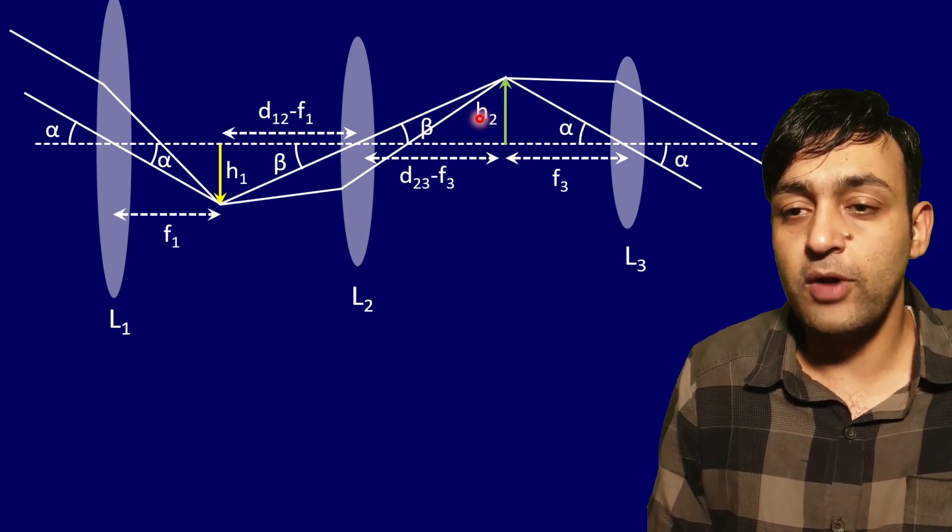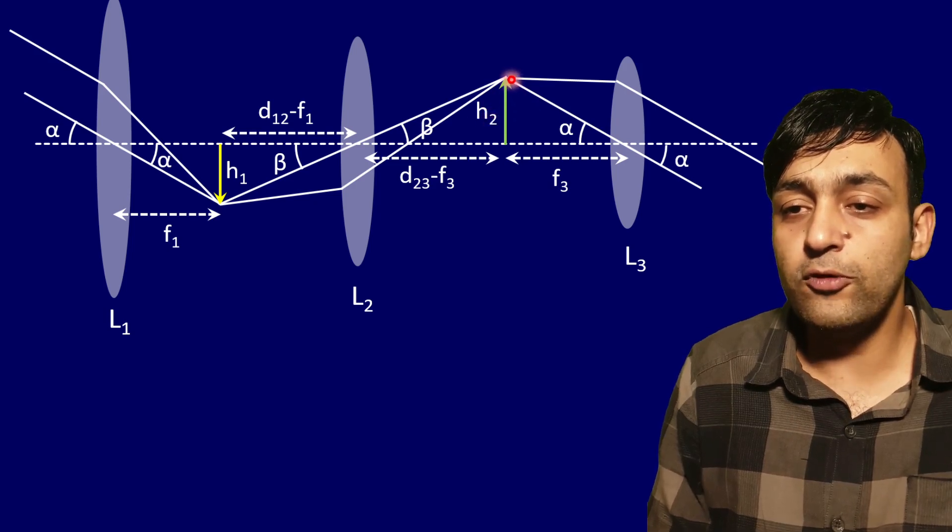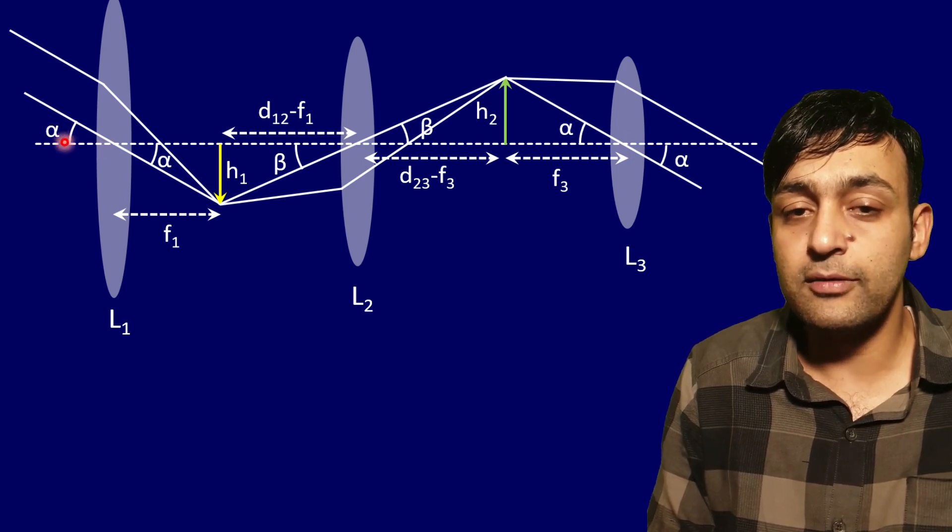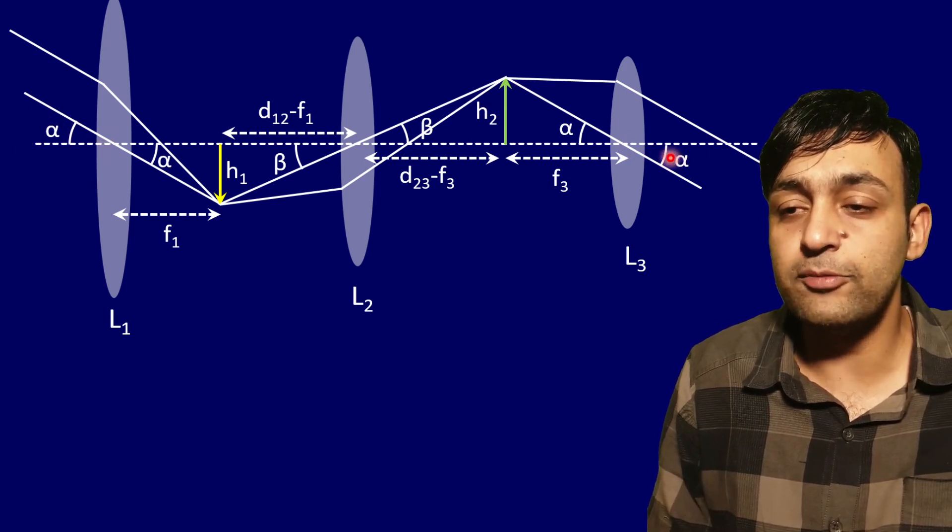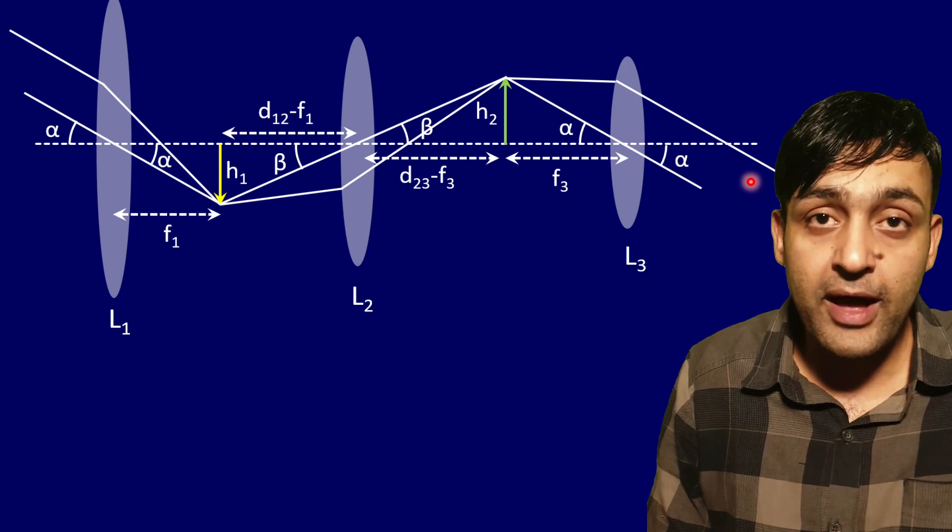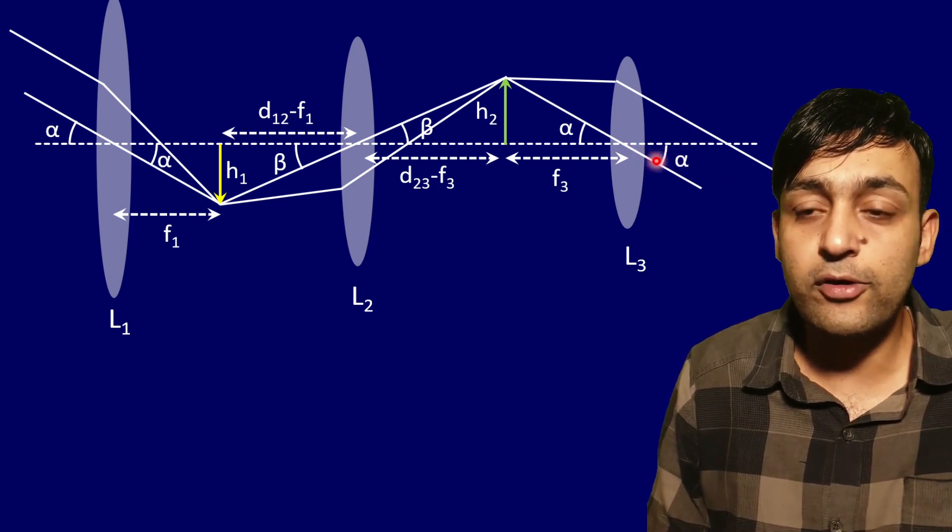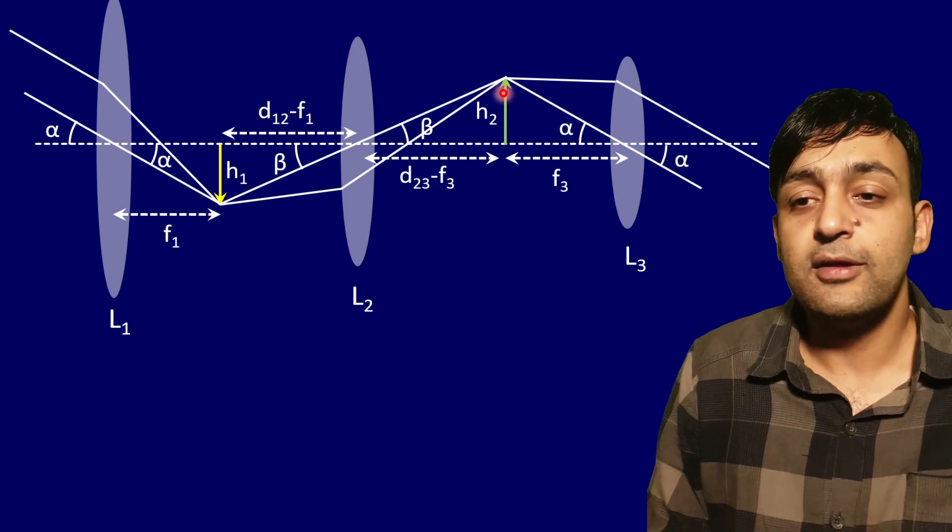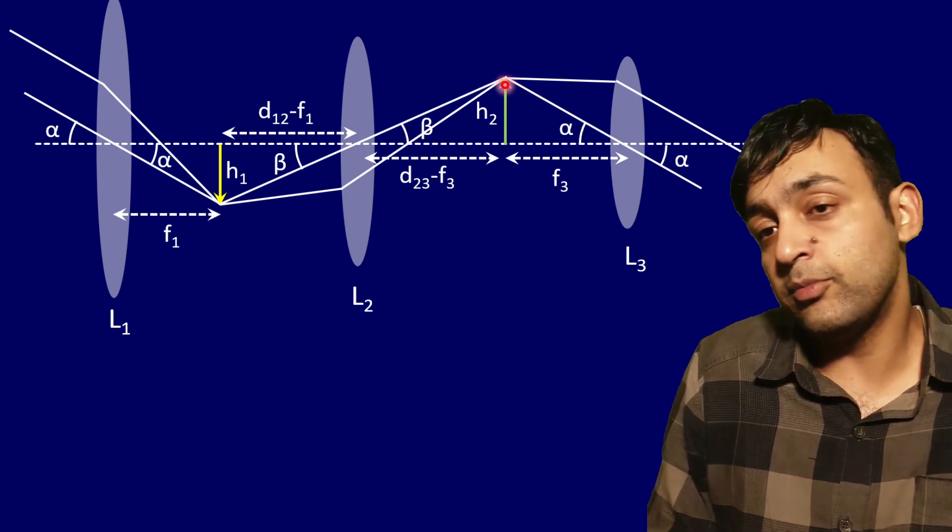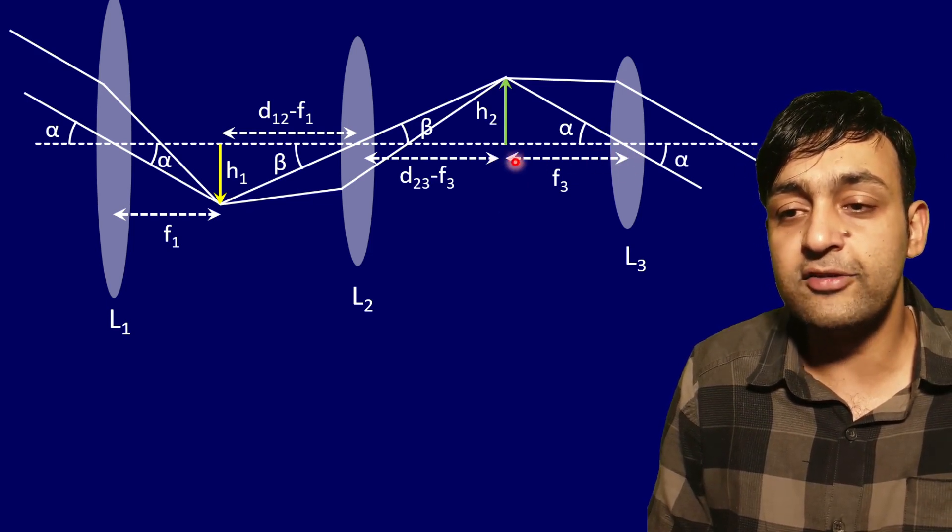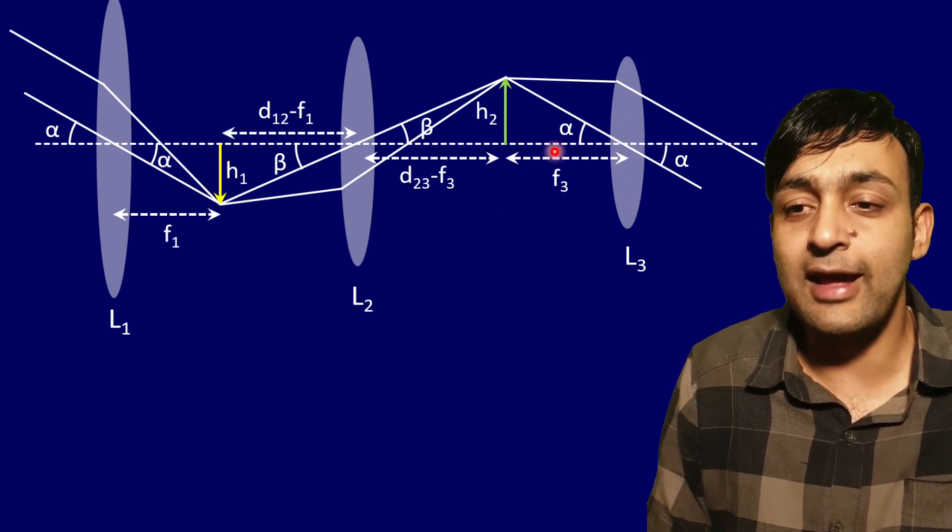From here, final rays have to be parallel to the initial ray making the same angle with the principal axis. Since they are parallel, they are going to infinity. If they are going to infinity, the object is on the focal plane, so they must also be at distance f3 from lens L3.